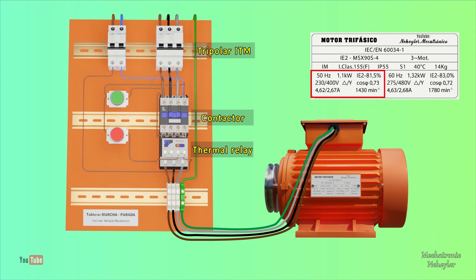While the current value supported by the other elements can be higher and there would be no problems. Take into account that the current value of the power cables must withstand more current than the three-pole thermomagnetic switch. For this motor, we can work with a cable with a minimum section of 2.5 square millimeters and an ITM of 16 amps.